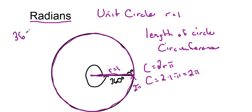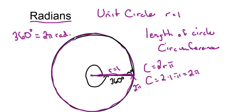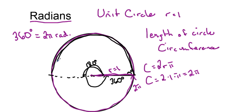360 degrees is actually equivalent to what we refer to as 2 pi radians. So what that also means is this: if we take 180 degrees — essentially finding a radian as this arc length going right there — 180 degrees, which is half of the semicircle, is going to be the length of this arc of the unit circle. So 180 degrees is half of 360, so it's going to be half of 2 pi, which gives us pi radians.